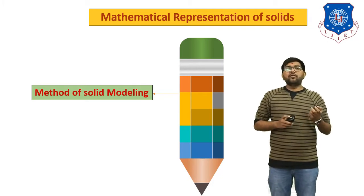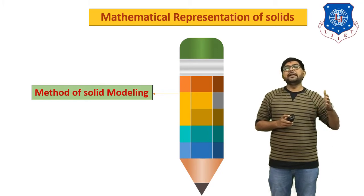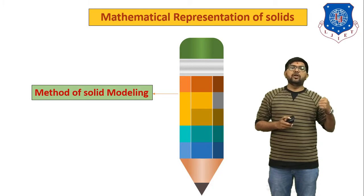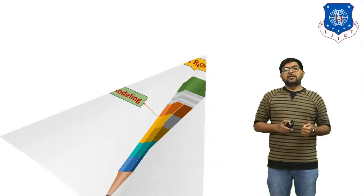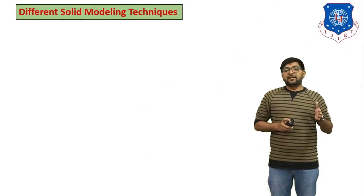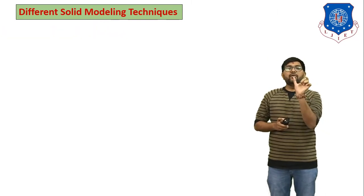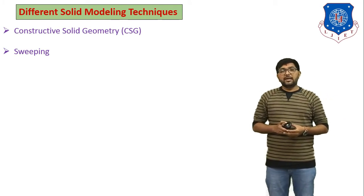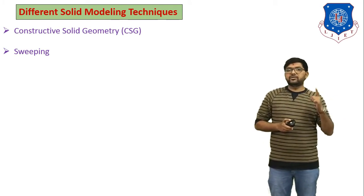We have a number of methods for converting any 2D object into a 3D object. In solid modeling there are a number of methods available. The first one is CSG — you have to remember the full form: Constructive Solid Geometry. That is the first method of solid modeling.